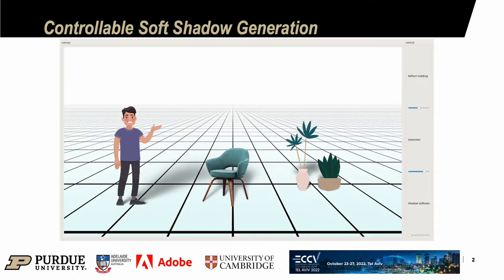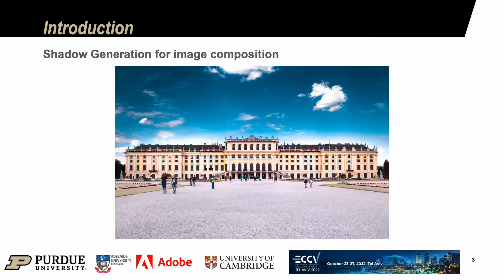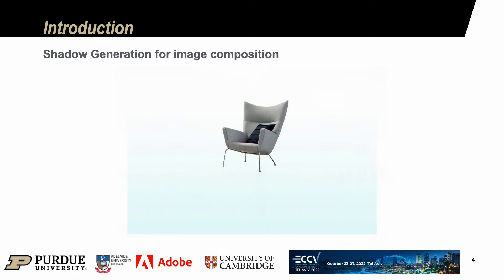We propose a framework to render controllable soft shadows for image composition. Shadow is an important visual hint to make image composition natural. In product design, shadow and reflection improve the visual quality of the overall composition result.